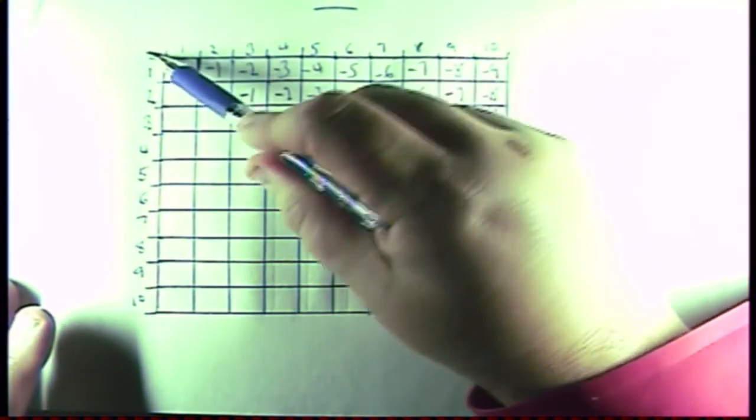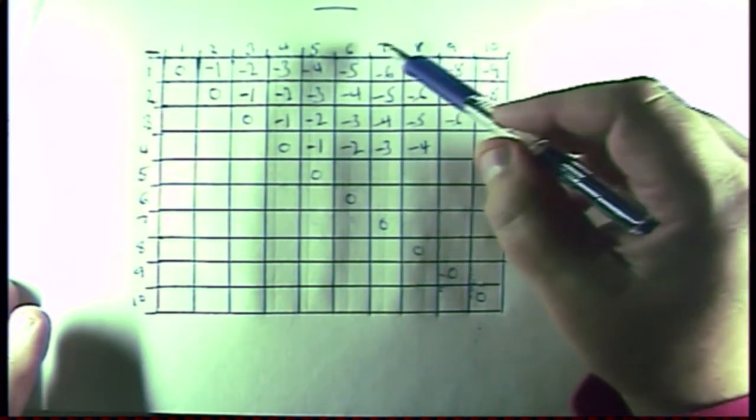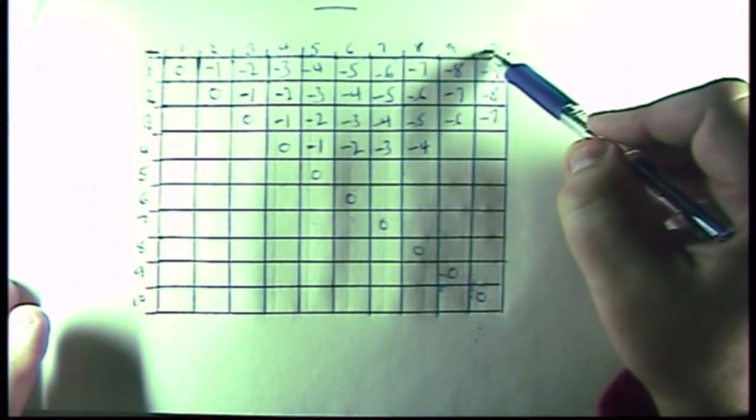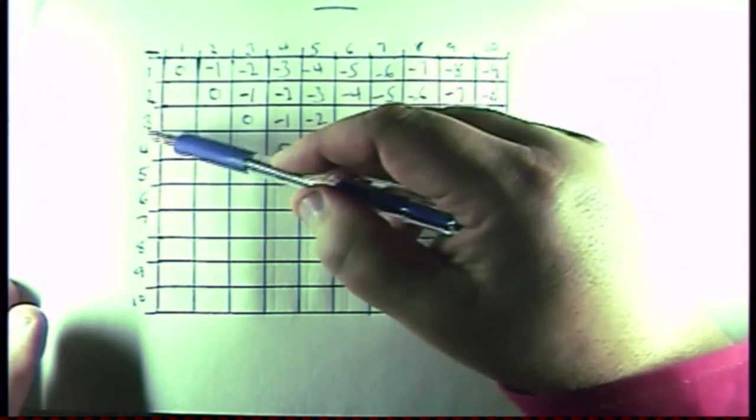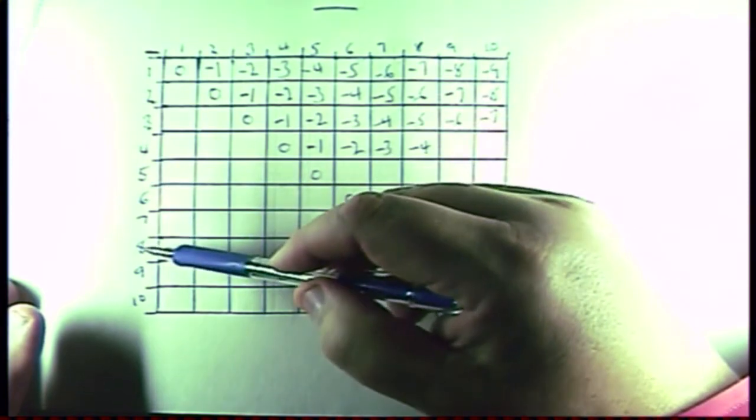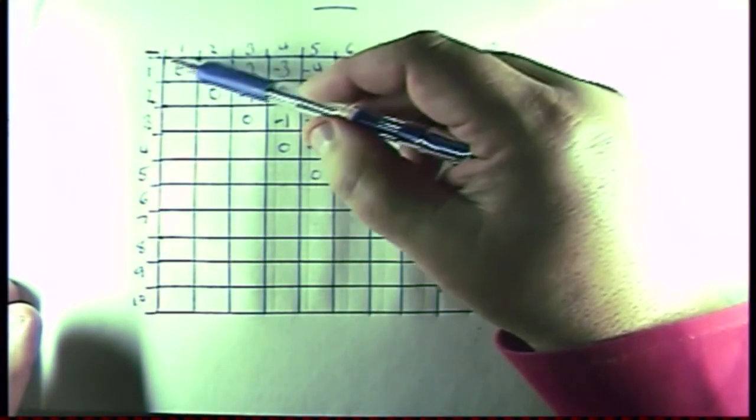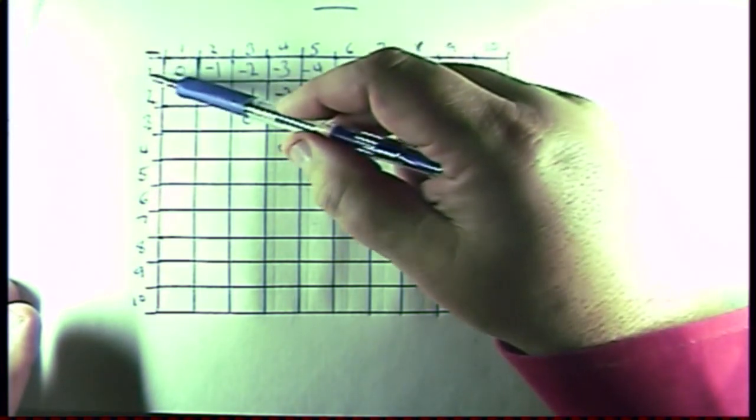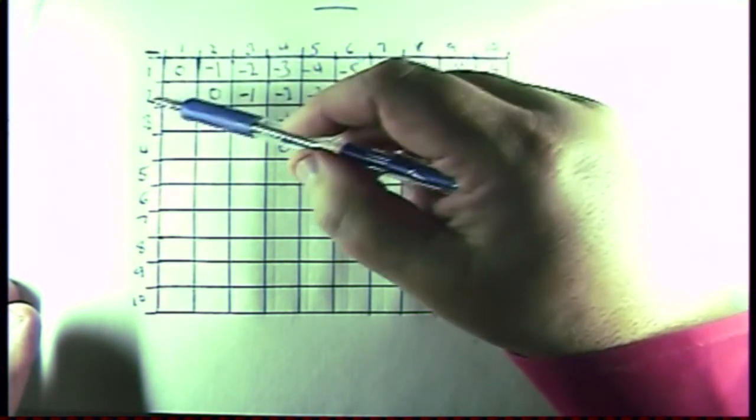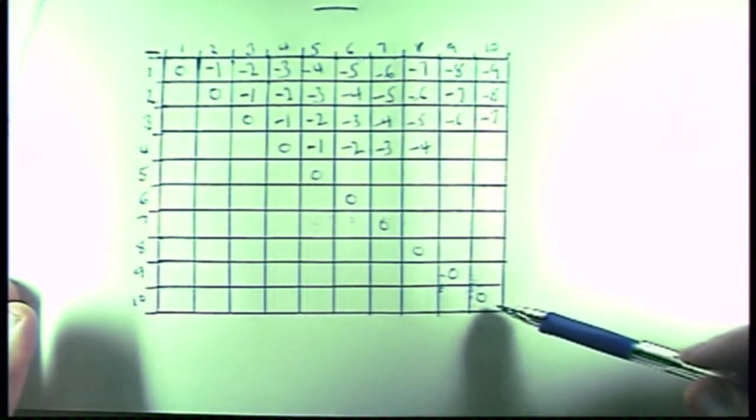We put a minus sign here, and then we put 1, 2, 3, 4, 5, 6, 7, 8, 9, 10 along the top, and then minus 1, 2, 3, 4, 5, 6, 7, 8, 9, 10 along the side. And we said 1 minus 1 is 0. We said 1 minus 1 is 0, and then 2 minus 2 is 0, so we knew all along this axis, or this line here, we could put zeros.